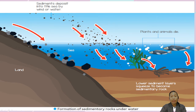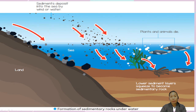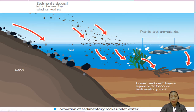The sediments — small particles from rocks and skeletons of sea creatures — move to the bottom of the ocean. There are small particles forming sedimentary rocks underwater. There are plants and animals that have died, and all these particles move to the bottom. The lower sediment layer gets squeezed to become sedimentary rock.